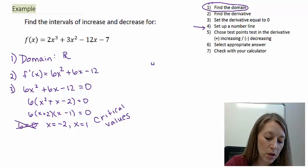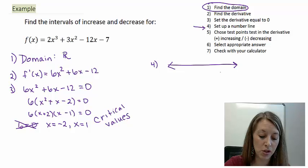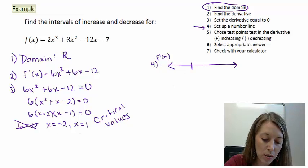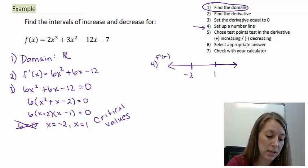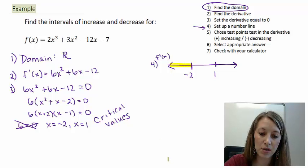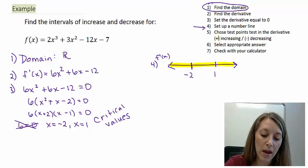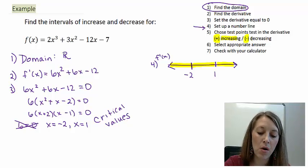We're on step four — setting up our number line. This number line represents what our derivative is doing. F prime of x equals zero when x equals negative 2 and when x equals 1. In step five, we need to figure out what's happening in between these intervals: from negative infinity to negative 2, from negative 2 to 1, and from 1 to infinity. We pick test points in between to determine whether the derivative is positive — meaning the graph is increasing — or negative, meaning the graph is decreasing.